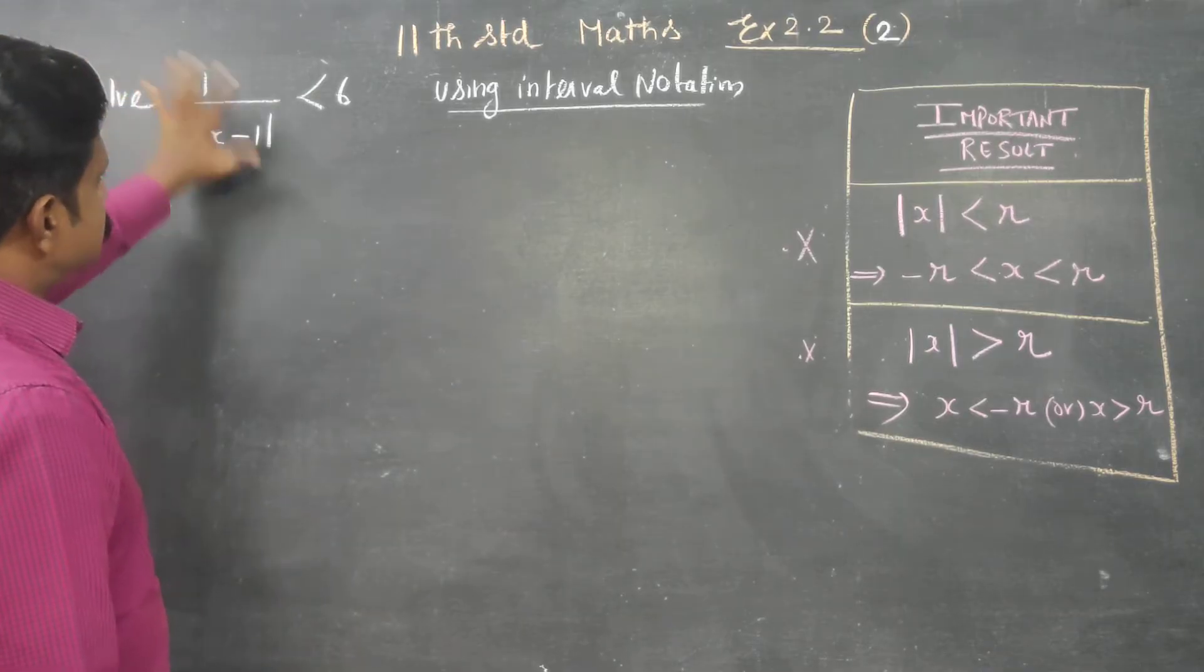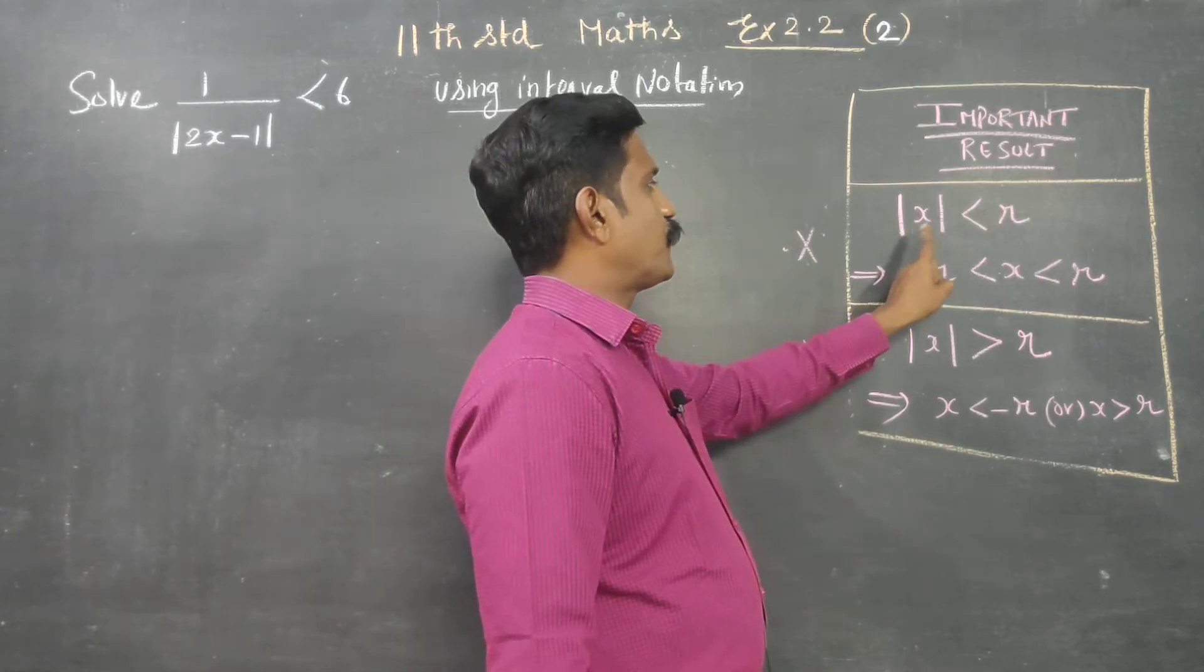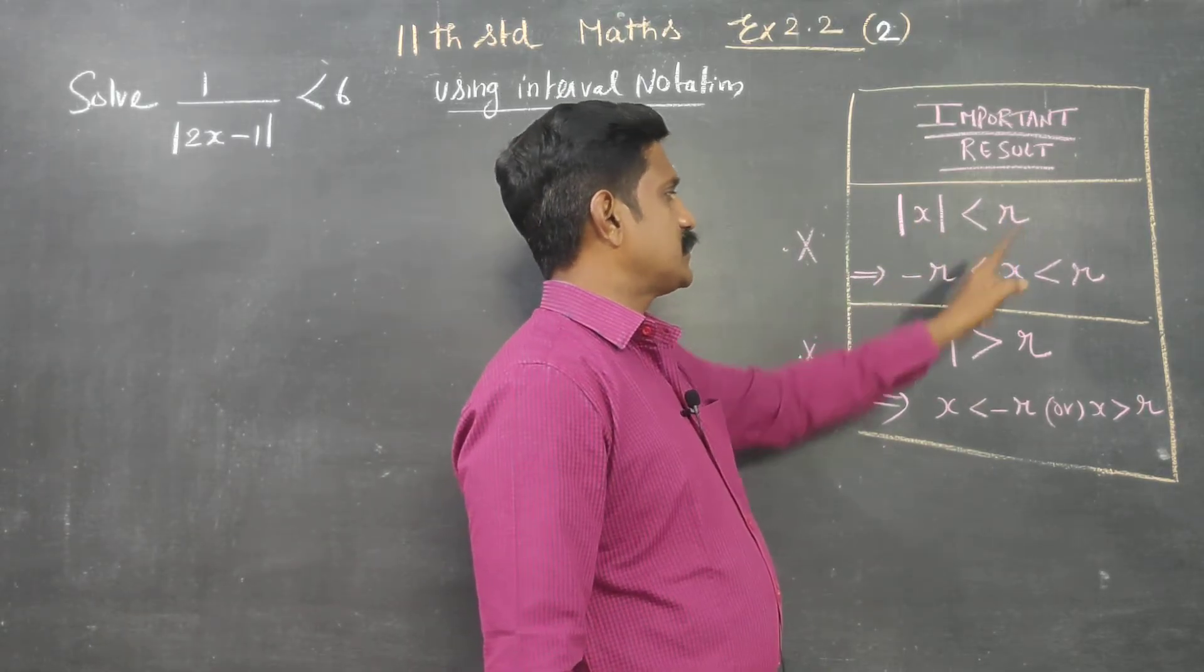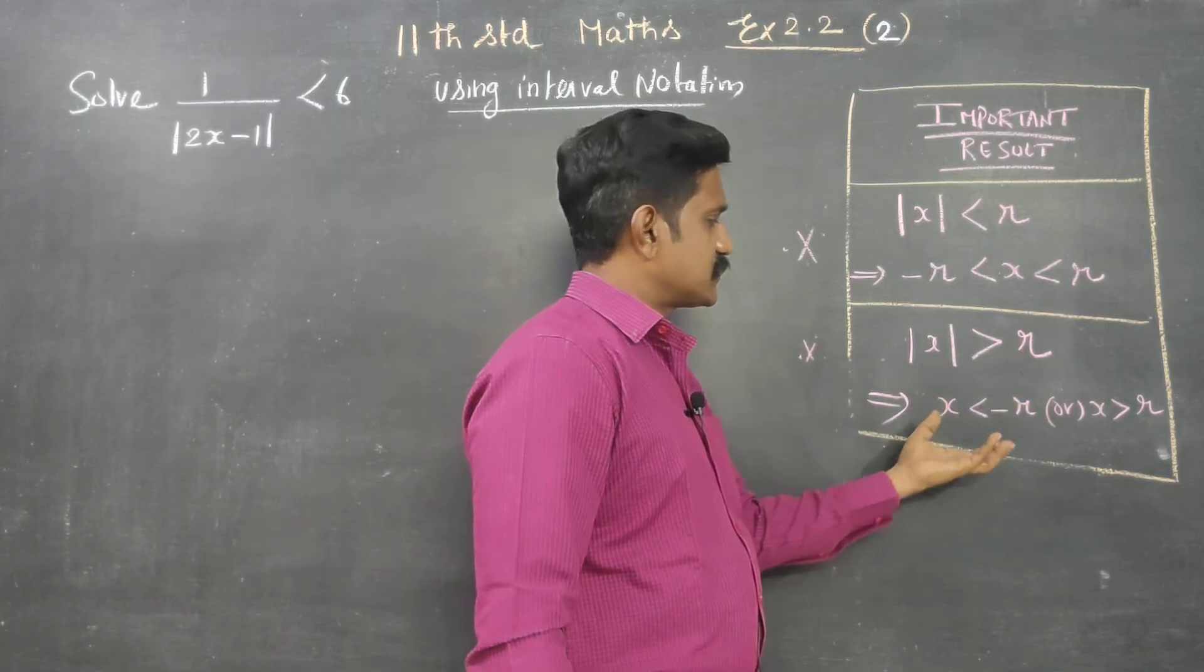For solving any absolute value inequalities, the main two formulas are: if |x| < r, this is the result. If |x| > r, this is the result.